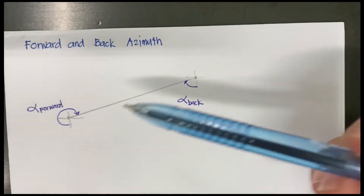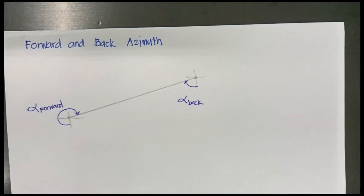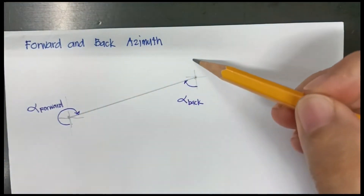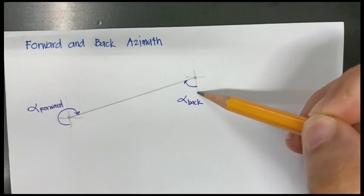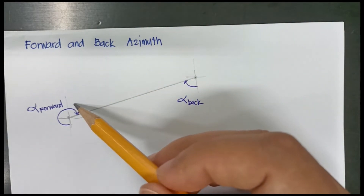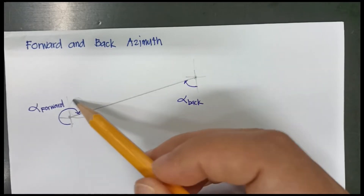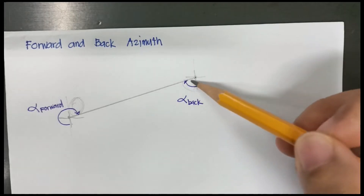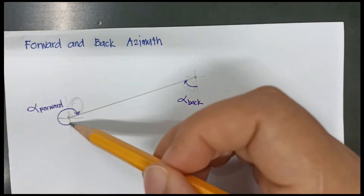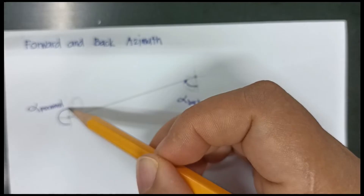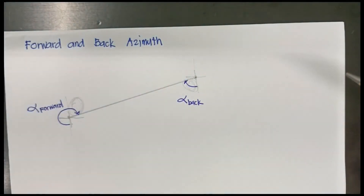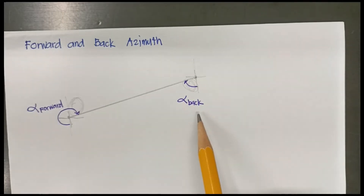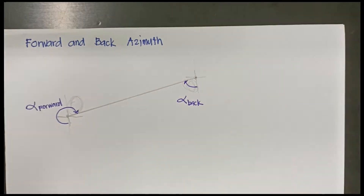If you look at the two meridians — the north-south line at the initial point and the north-south line at the terminal point — they are parallel. Therefore, the angle at the initial point and the corresponding angle at the terminal point are equal. Since a straight angle is 180 degrees, the difference between the forward and back azimuth is always 180 degrees.